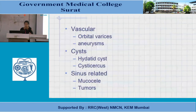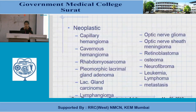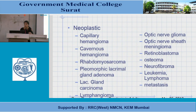Vascular causes include orbital varices and aneurysm of the ophthalmic artery. Cysts include hydatid cysts, sinus-related mucoceles, and various tumors. In neoplastic causes: capillary and cavernous hemangioma, rhabdomyosarcoma, lacrimal gland tumors, optic nerve glioma, meningioma, retinoblastoma, neurofibroma, leukemia, and lymphoma.